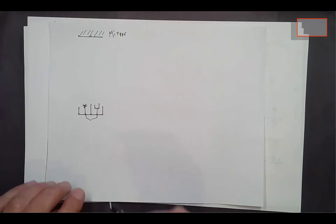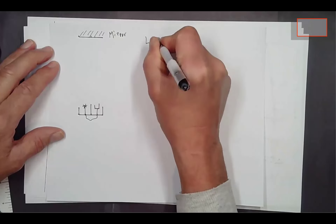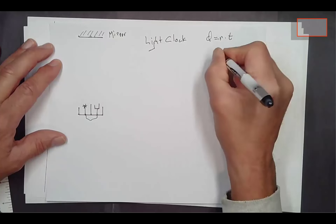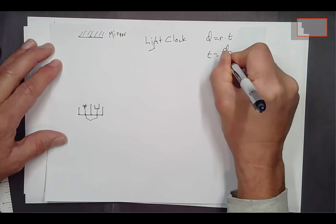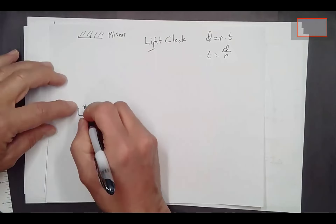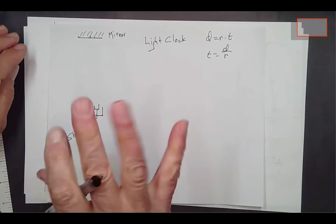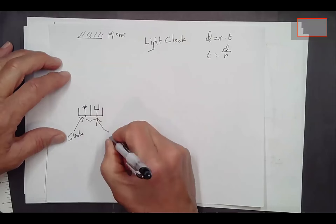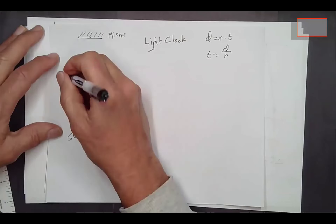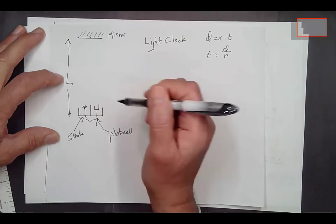Let's look at a light clock. It has a strobe at the bottom, a mirror at distance L above it, and a photo cell. The strobe flashes, light travels up to the mirror, reflects, and returns to the photo cell, which then triggers the strobe again. The distance from strobe to mirror is L, and the sideways separation between strobe and photo cell is very small compared to L.